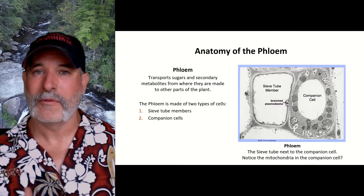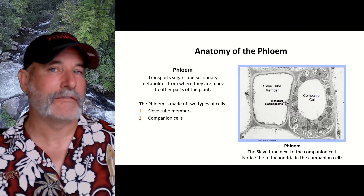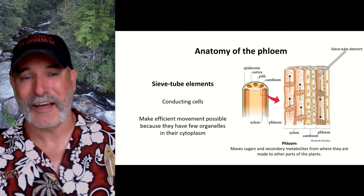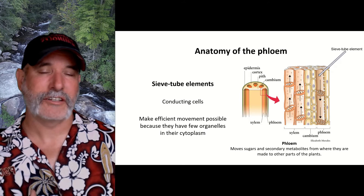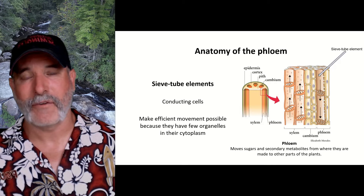The sieve tube elements are conducting cells. To make it efficient, they have very few organelles and very little cytoplasm. Then the companion cells, at least in angiosperms — these are your flowering plants.